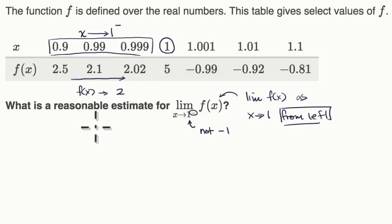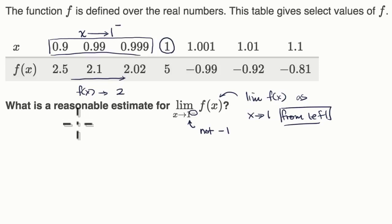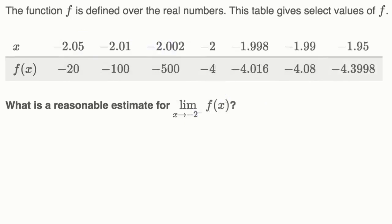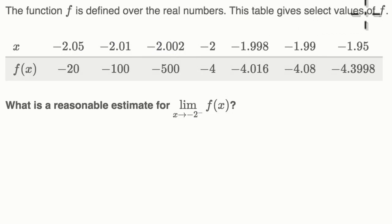So let's try another example here. Here it does look like there's a reasonable estimate for the limit as we approach this value from the left. The function f is defined over the real numbers. This table gives select values of f, similar to the last question.